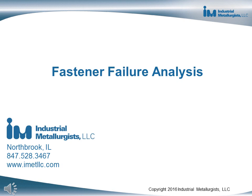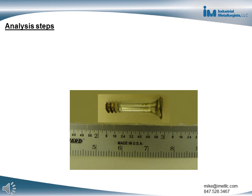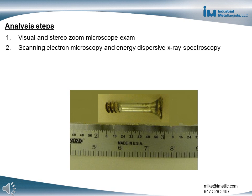This video presentation discusses the failure analysis of a metal fastener. The fastener was a two-inch screw used inside a building to hold up a wall system. The screw fractured less than one week after it was installed. The failure analysis steps performed included visual and stereo zoom microscope exam, scanning electron microscopy and energy dispersive X-ray spectroscopy, and metallography and micro hardness testing.